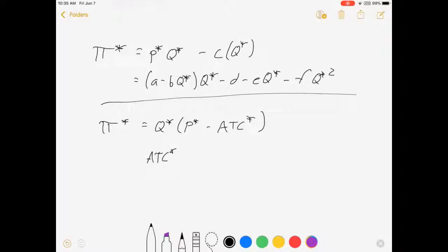Average total cost is equal to your cost function divided by Q. In this case, that's D plus EQ star plus FQ star squared, and all of that is divided by Q star.